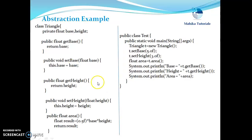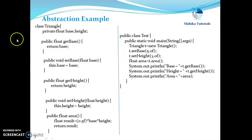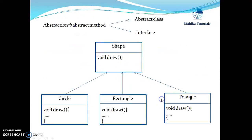So in this example we are achieving both encapsulation as well as abstraction. We have kept our data members private and are accessing them using getters and setters in the outside code — that is encapsulation. Similarly, the outside code is calling the area method without having knowledge of its implementation details — that is an example of abstraction.